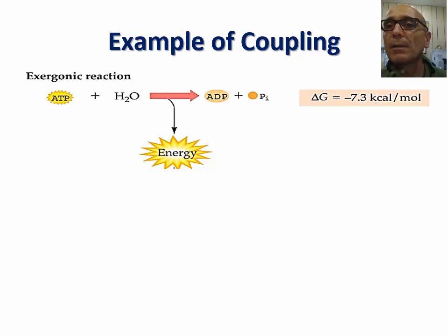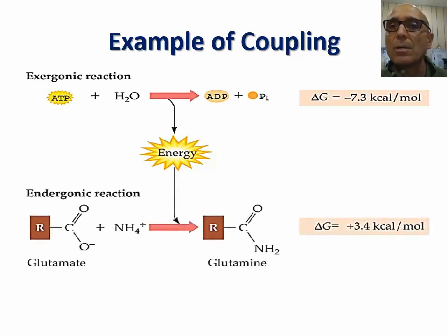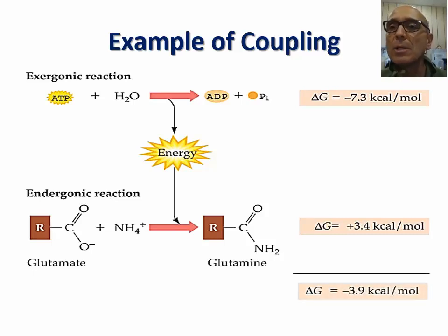Let's look at an example of the coupling of endergonic and exergonic reactions in the cell. The hydrolysis of ATP releases about 7.3 kilocalories per mole of ATP; therefore, the delta G is negative 7.3 kilocalories per mole. The synthesis of the amino acid glutamine is an endergonic reaction and requires an input of 3.4 kilocalories per mole, so the delta G is positive 3.4 kilocalories per mole. When these two reactions are coupled and we add the delta G's, the sum gives a net release of energy of negative 3.9 kilocalories per mole, making the coupling of these two reactions thermodynamically favorable.